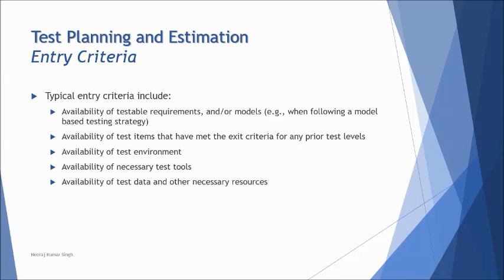They give an example of entry criteria and exit criteria. Entry criteria determines when to start a process, stage, or project — it's essentially a checklist. Examples include: availability of testable requirements, availability of test items that have met the exit criteria of a previous test level (for example, exit criteria of unit testing can become entry criteria of integration testing), availability of the test environment, availability of necessary test tools, and availability of test data. This is just a template; you can create your own custom entry criteria.